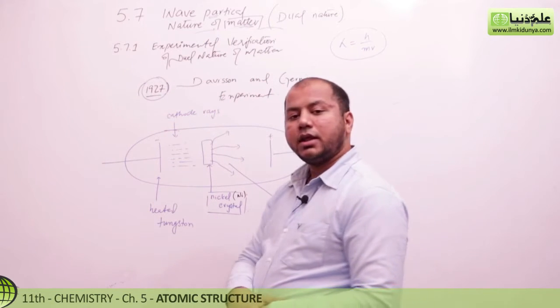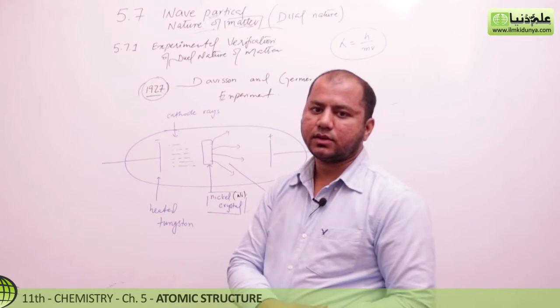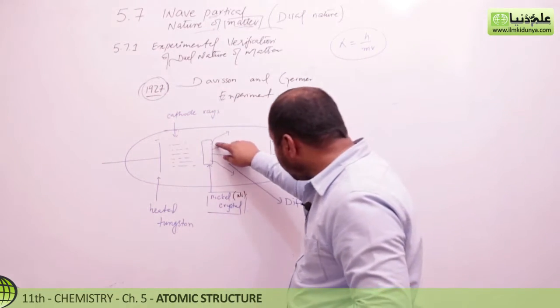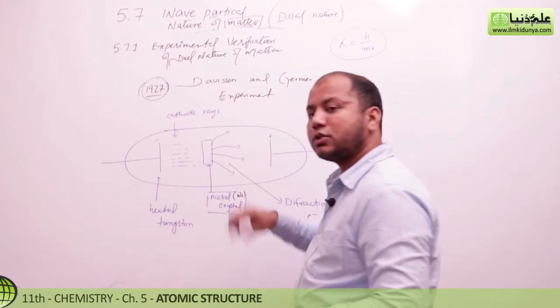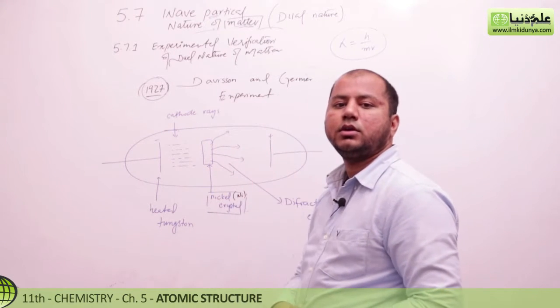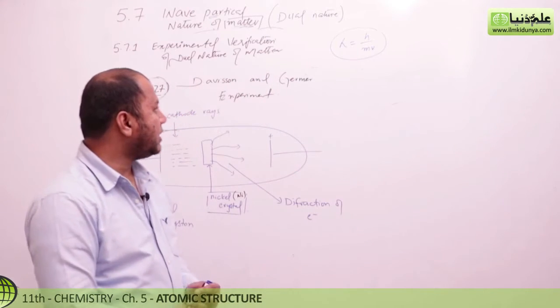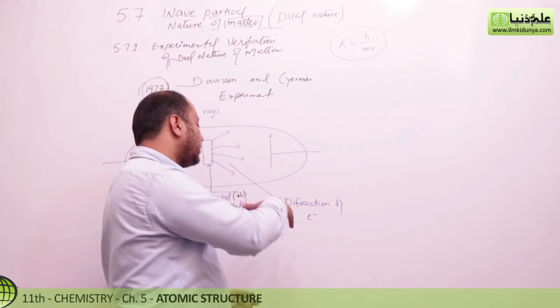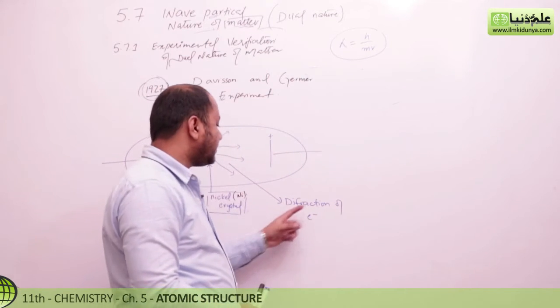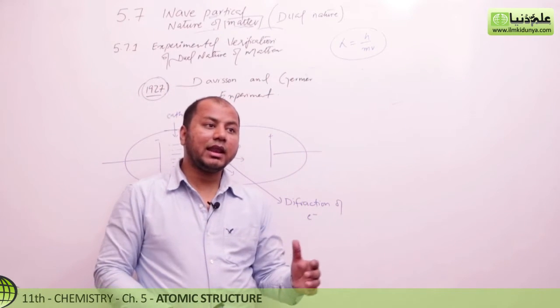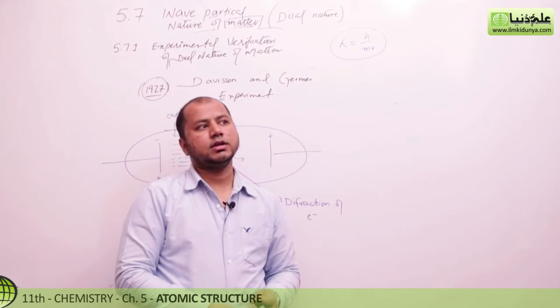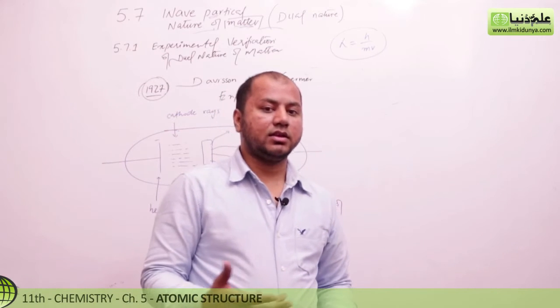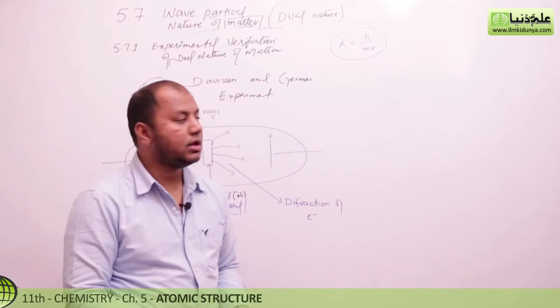Davisson and Germer did experimental verification in 1927 with crystal diffraction. This is based on the fact that Broglie said matter has dual nature. This experiment proved diffraction of electrons, so electrons have wave nature. When they are struck, they show materialistic matter nature.